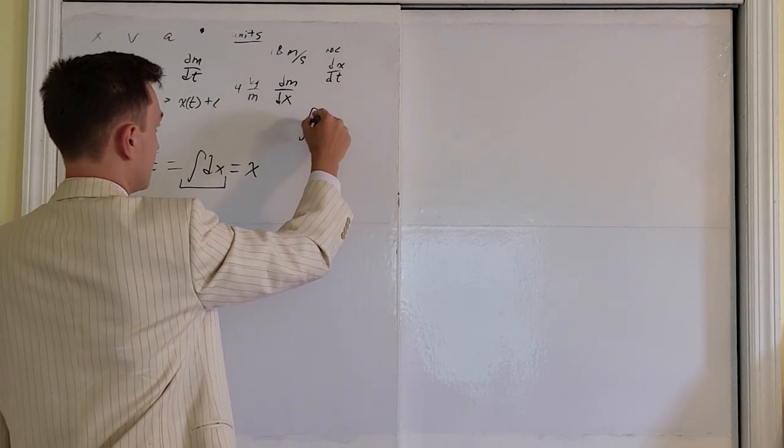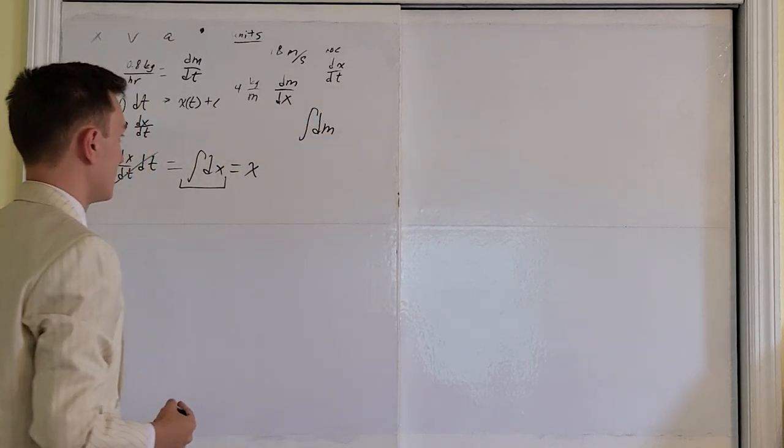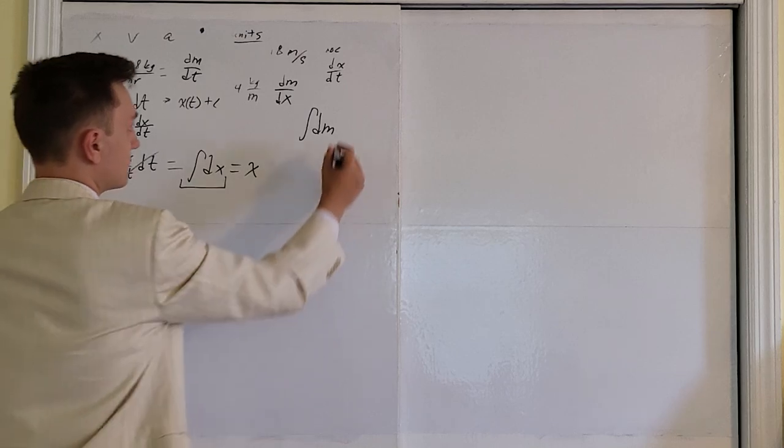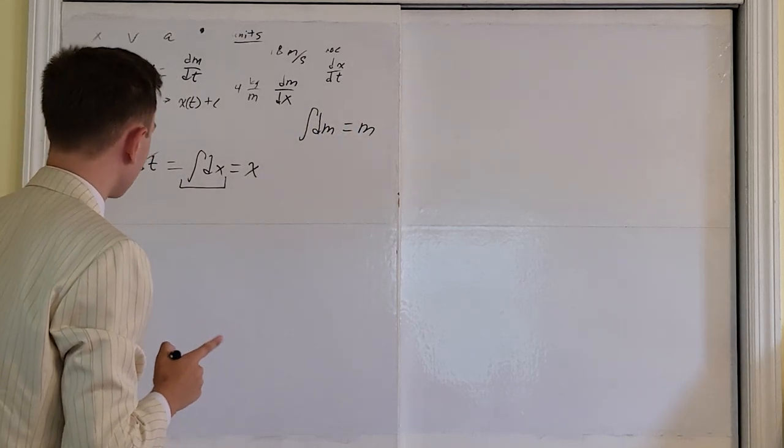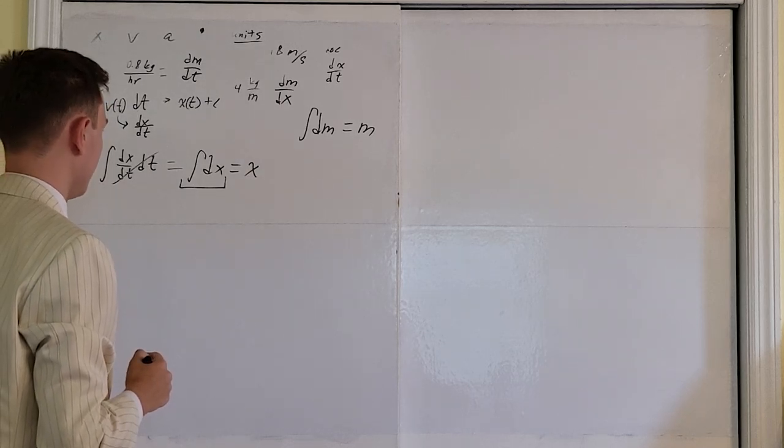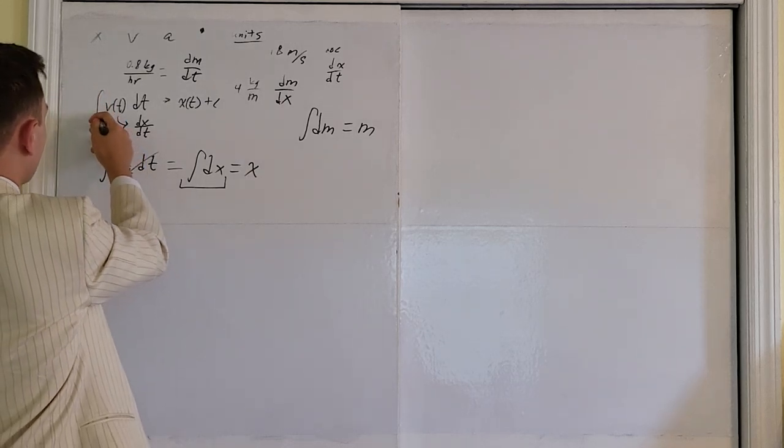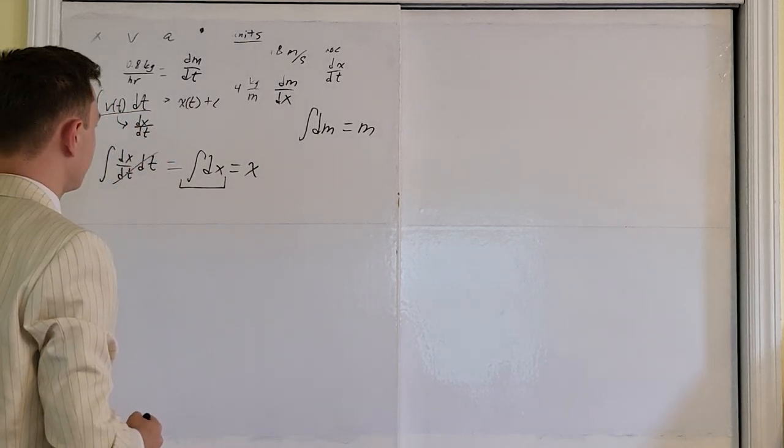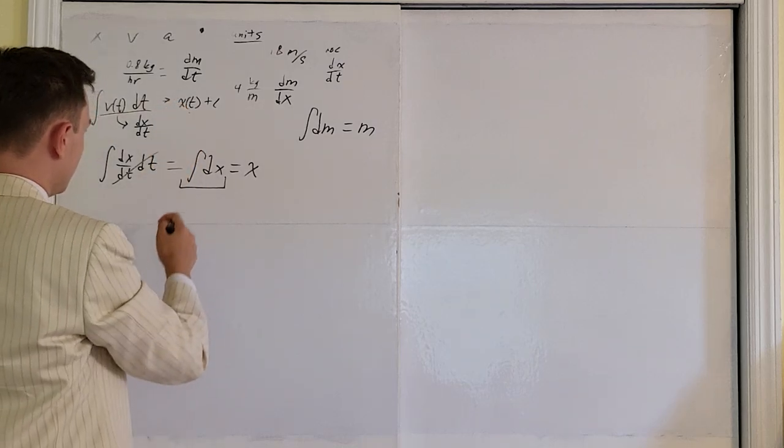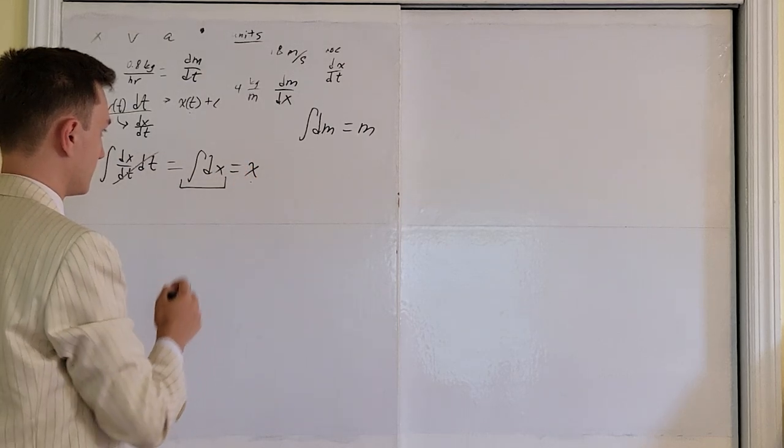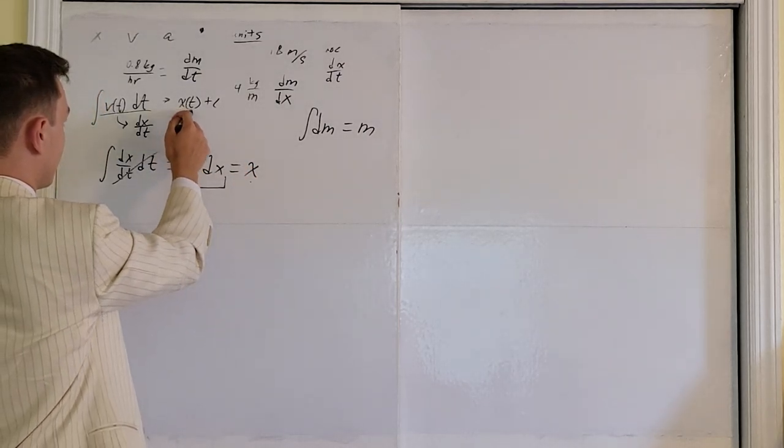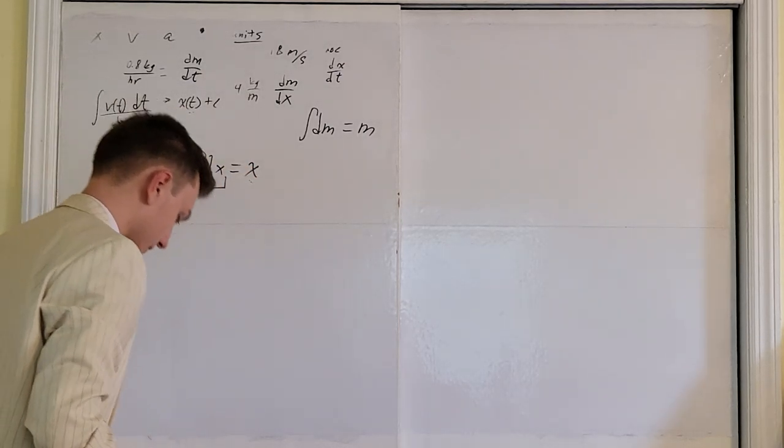If I gave you the integral of dm, you would immediately look at that and say, oh, that's just m. But it's important to notice the subtle difference that we have here. The integral of velocity with respect to time gives me a function. The integral of dx just gives me x, a quantity. With this integral, I get a function. With this integral, I get a quantity.